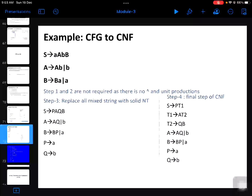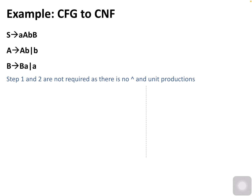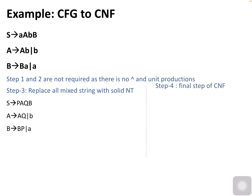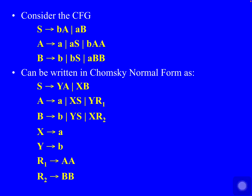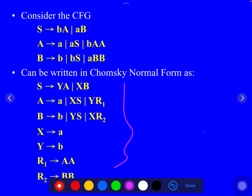For another example, there is no epsilon or unit production, so you go directly to replacing all mixed strings with non-terminal symbols. This is a second example of the conversion. We will cover more examples in the classroom in detail, and you should take more grammar examples to convert them into CNF form.